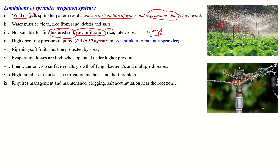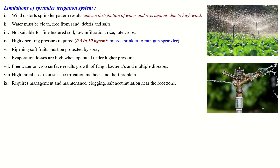This system is also not suitable for rice and jute crops. As the system is operated under high pressure — that is 0.5 to 10 kg per centimeter square — a high capacity pumping system or pump motor is required to generate this much pressure. Ripening of soft fruits must be protected from the spray. The water flowing from the nozzle in the form of droplets may not be fine drops; the drop size may increase and fall on fruits or small flowers of your crops. In this condition, flowers or fruits may be damaged or fall due to the higher pressure of the droplets, so they should be protected.